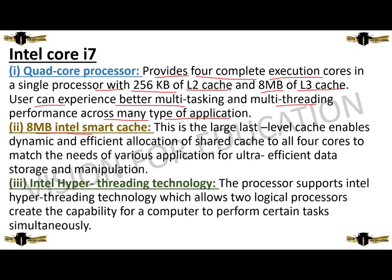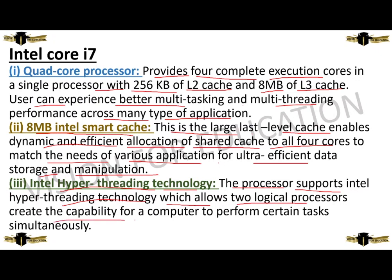Coming to the 8 MB Intel Smart Cache — this is the largest, latest, last level of cache. It enables dynamic and efficient allocation of the shared cache to all four cores to match the needs of various applications for ultra-efficient data storage and manipulation. The last feature is Intel Hyper-Threading technology. The processor supports Intel Hyper-Threading technology, which allows two logical processors to create the capability of a computer to perform certain tasks simultaneously.